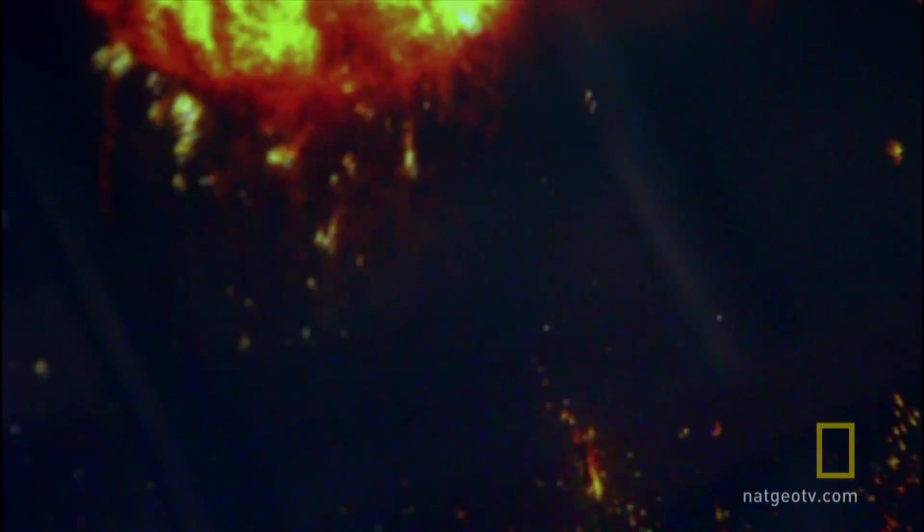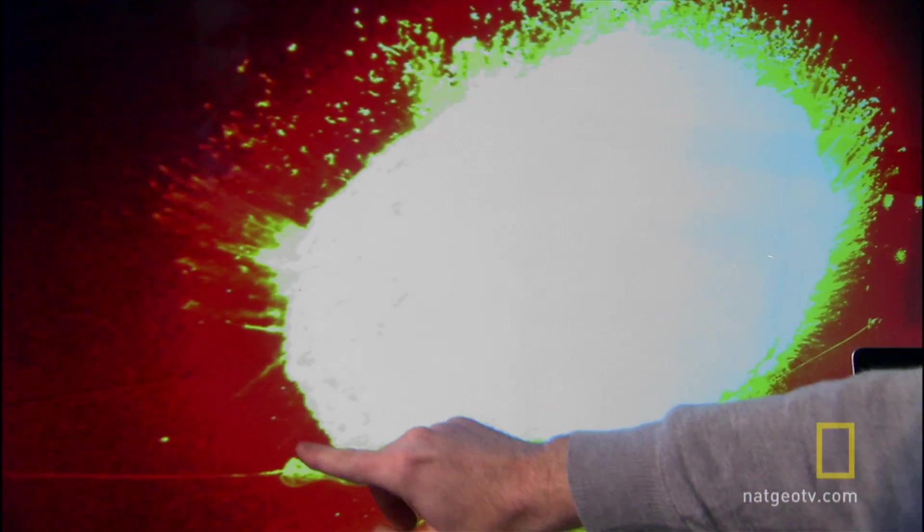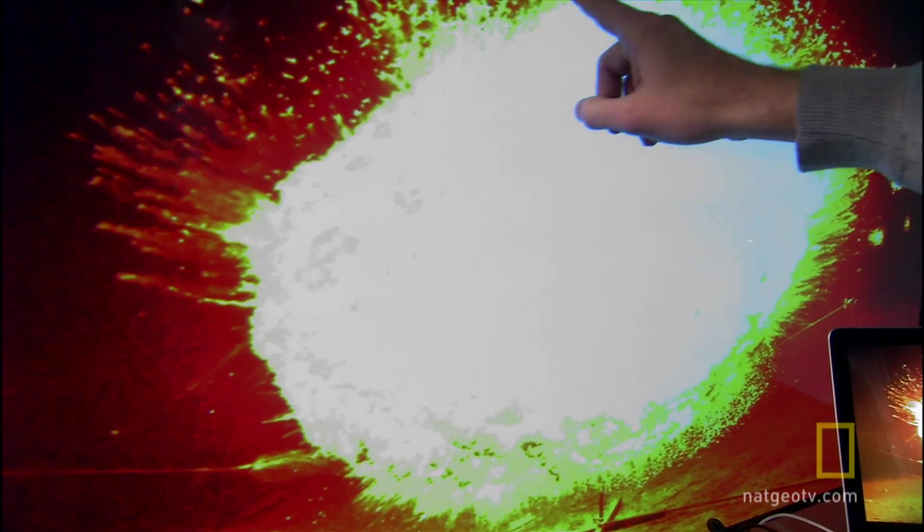In a supernova, we just see this distant point of light, and we can't really resolve all the details. But here, we can see all these fast-moving bits that are just flying away.